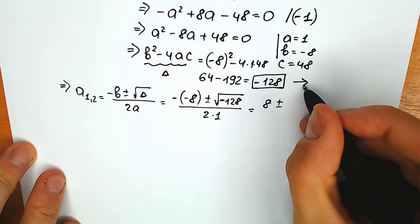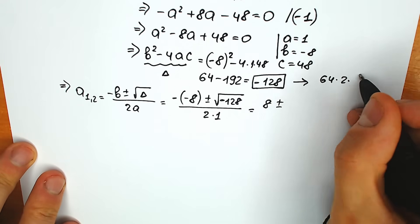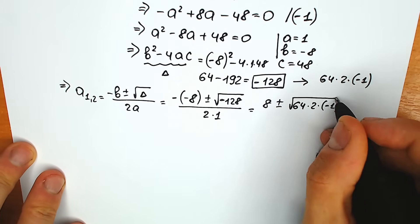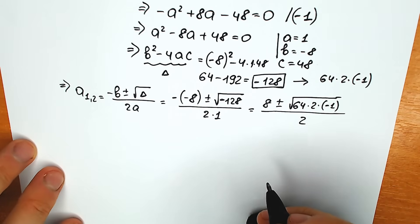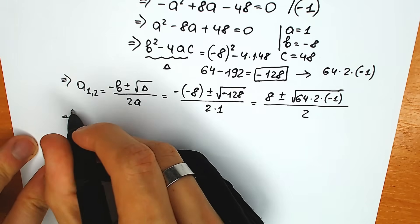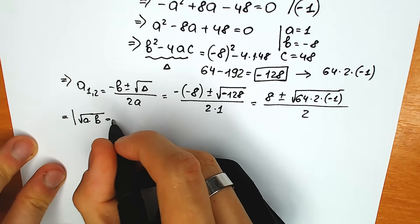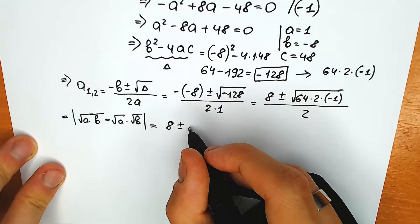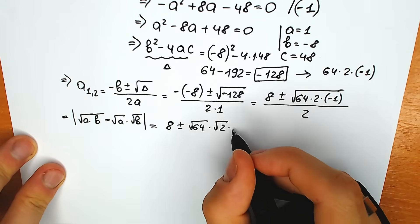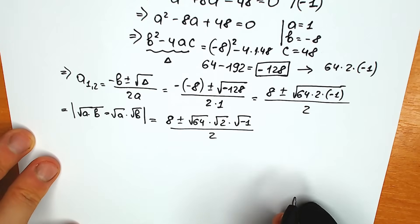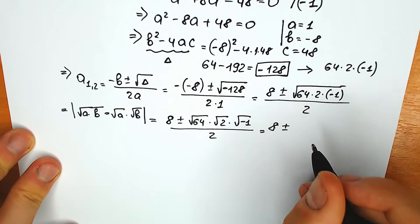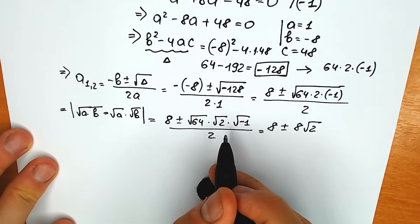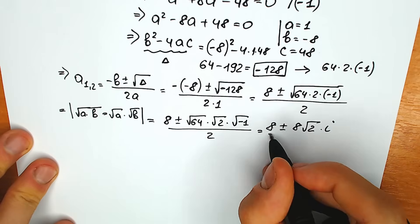How can we express 128? We can express it as 64 times 2 times minus 1. So we have square root of 64 times 2 times minus 1, all over 2. Using the property that the square root of a times b equals square root of a times square root of b, we split it: square root of 64 times square root of 2 times square root of minus 1, all over 2. Square root of 64 equals 8. Square root of minus 1 is our imaginary unit i, divided by 2.